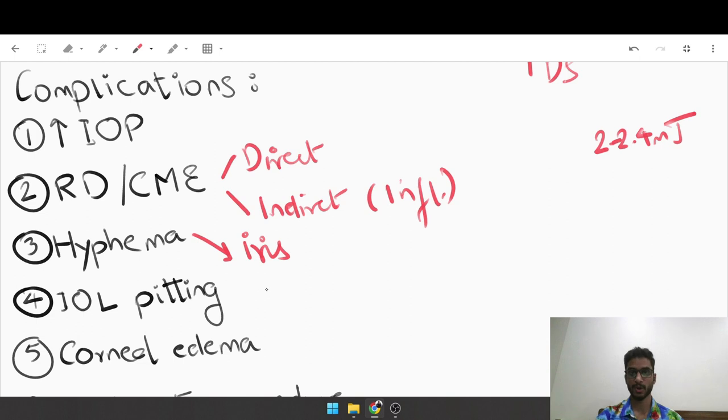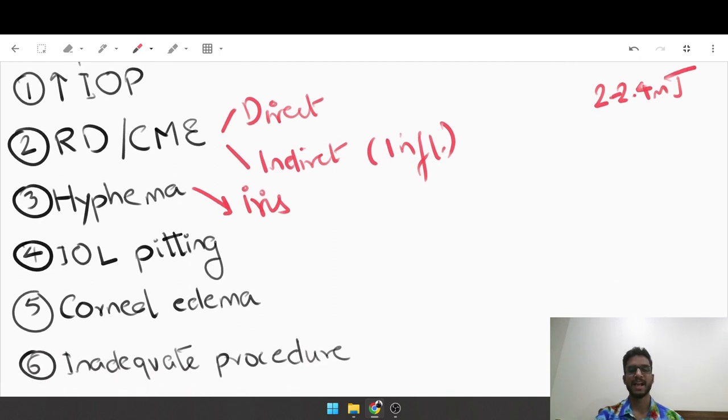You can cause a corneal edema - again, you focus the energy accidentally on the cornea, or if you put a sustained amount of energy, too many shots, too much duration, then even a normally focused beam can cause corneal edema, transient but something that needs to be kept in mind. Finally, the last complication is an inadequate procedure. You perform the capsulotomy, take the pinhole vision once you are done, and you realize that the vision has not improved. That means you did not perform a capsulotomy of the three to four millimeter diameter that was recommended - you did it a smaller size. That comes with practice.